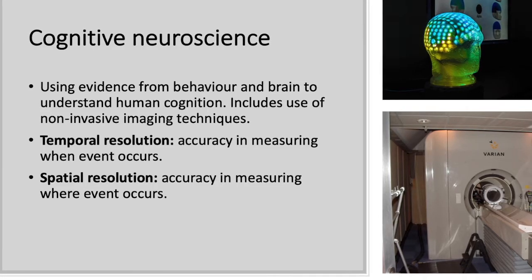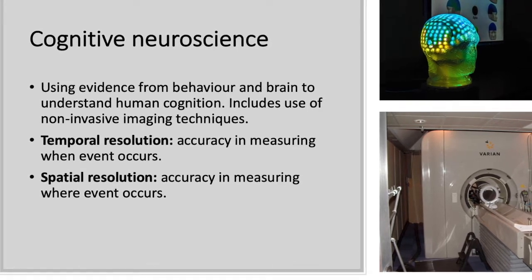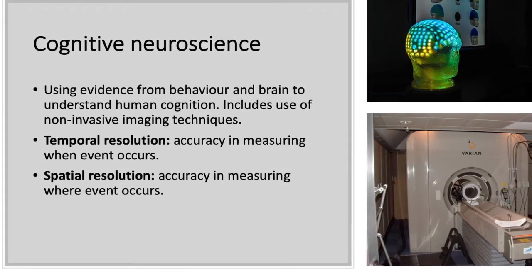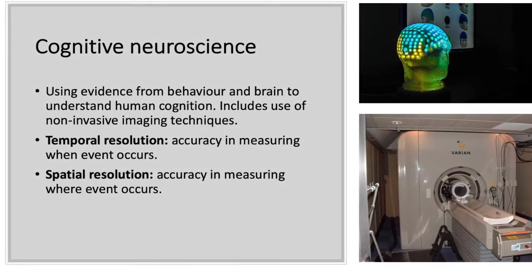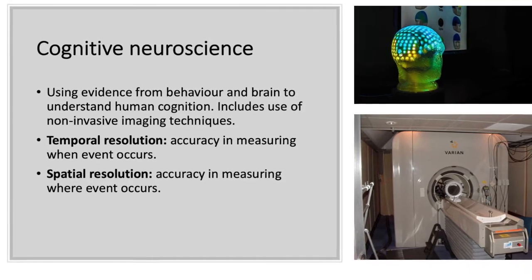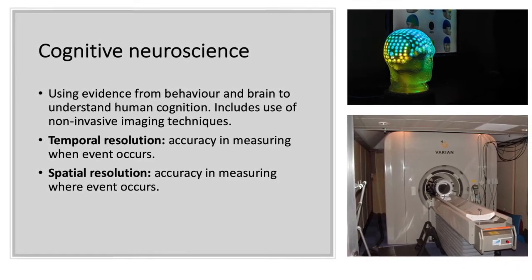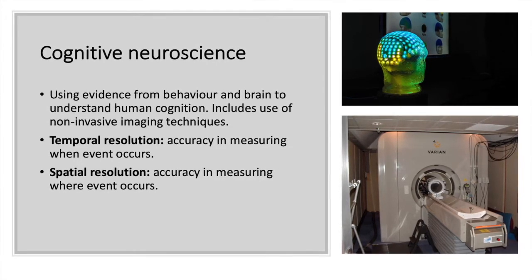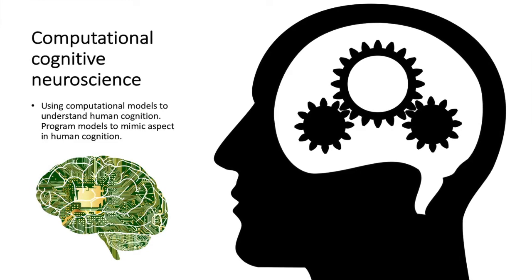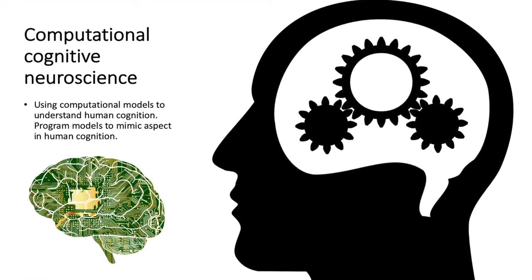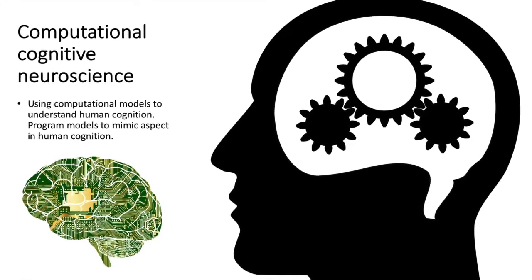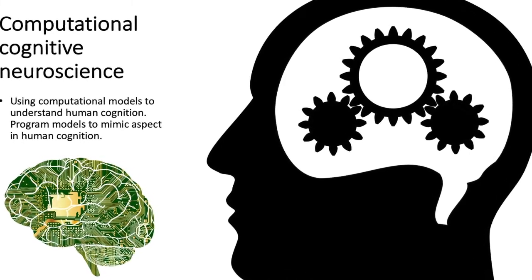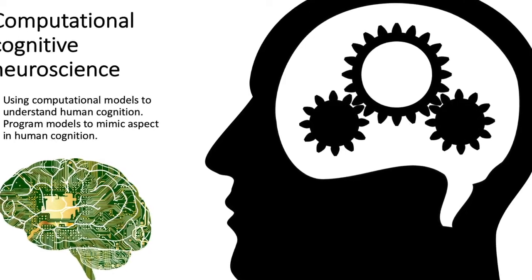Cognitive neuroscience is defined as using evidence from both behavior and the brain to understand human cognition. It includes the usage of non-invasive imaging techniques. One must consider temporal resolution, which is the accuracy in measuring when an event occurs, and spatial resolution, which is the accuracy in measuring where an event occurs. There is also computational cognitive neuroscience, which uses computational models and program models to mimic and understand aspects of human cognition.